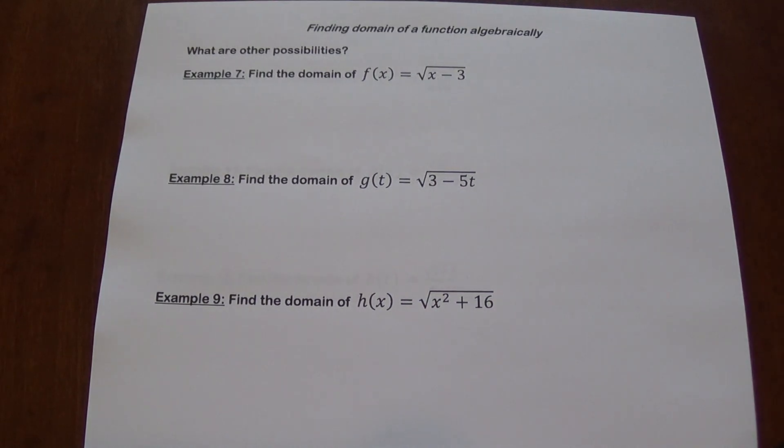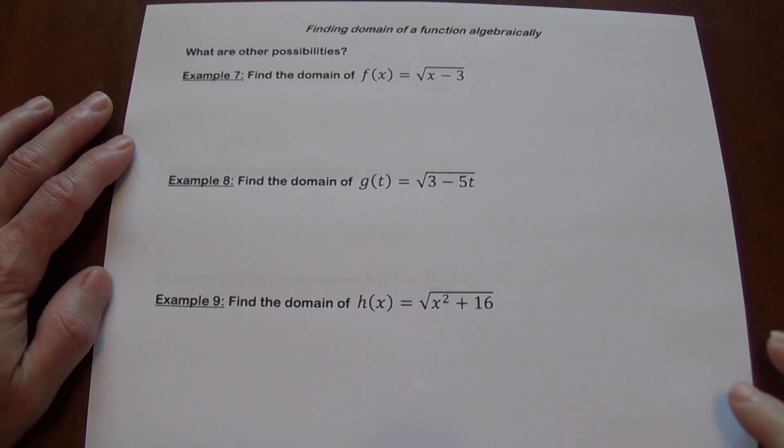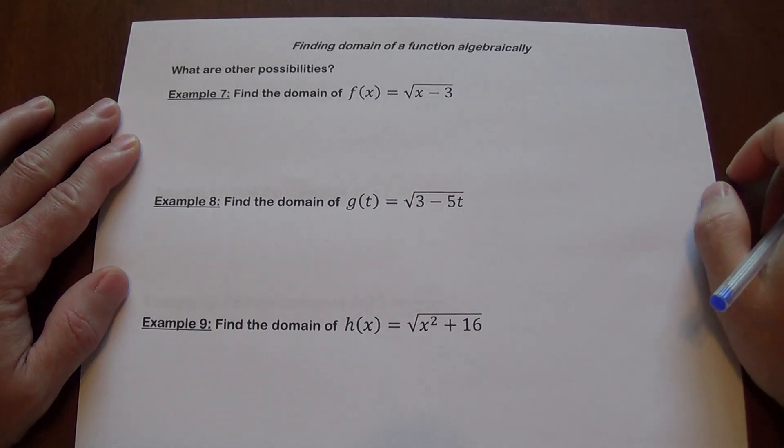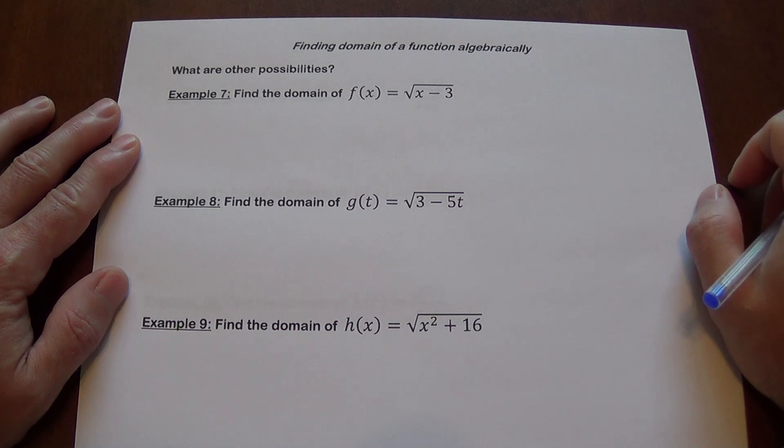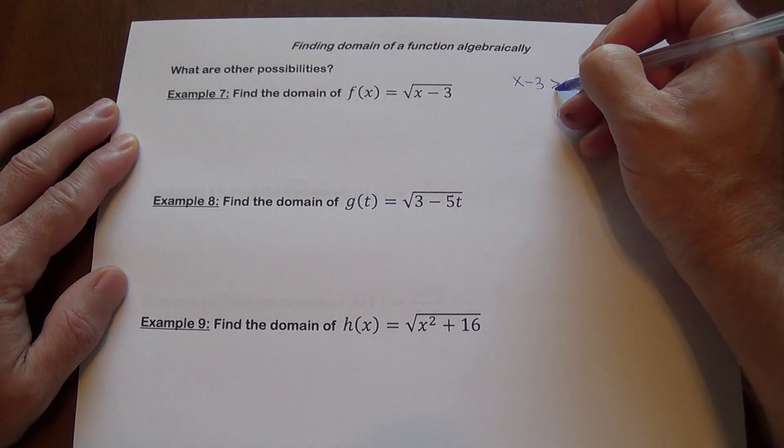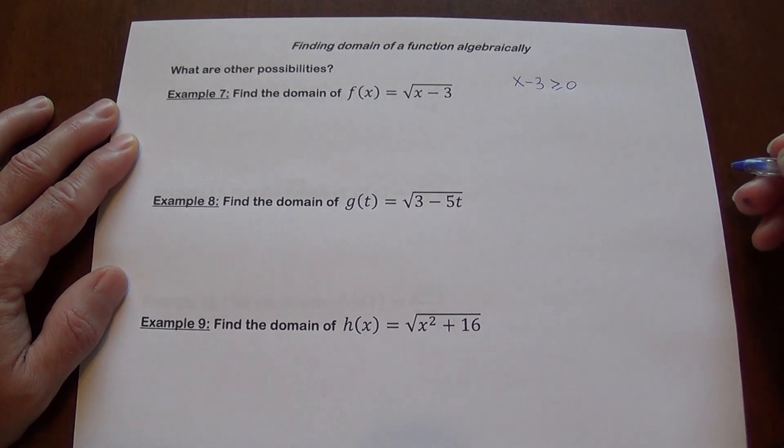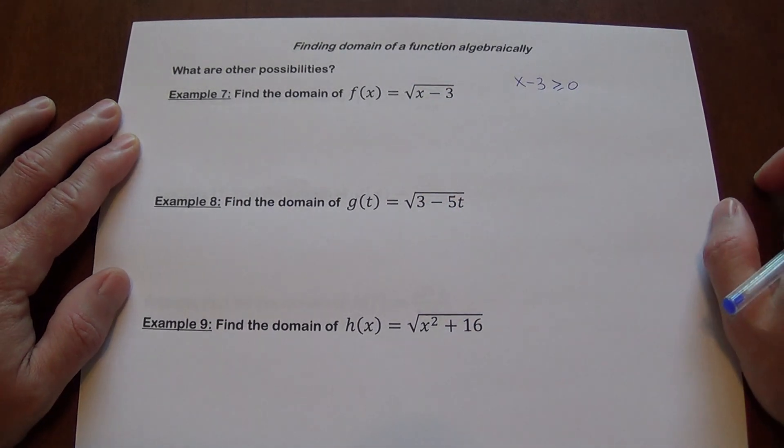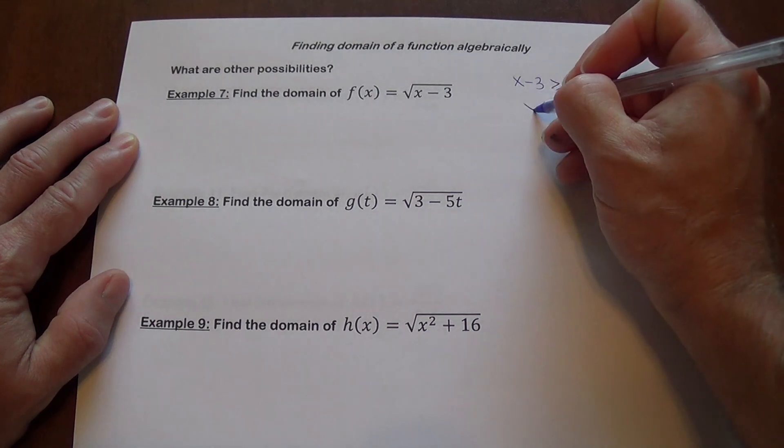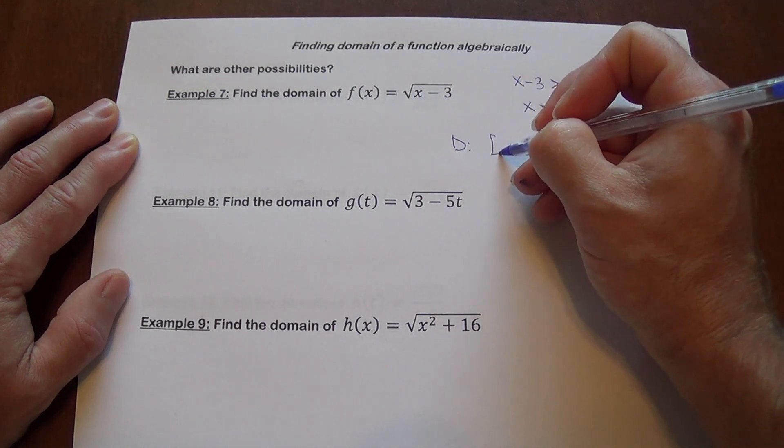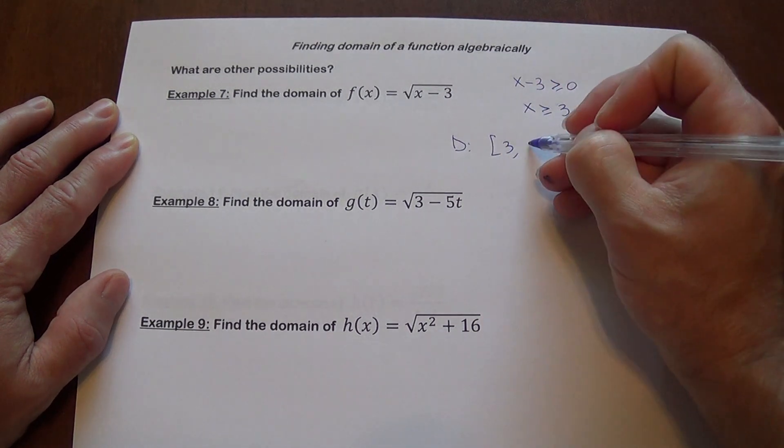What's another possibility? Is it always division? No. You also have square root. So with the square root, you want to remember that the expression under the square root, to make the whole thing real, we want it to be non-negative. So in this case, what we're going to do is say, okay, what I want is x minus 3 to be greater than or equal to zero. As long as the radicand is not negative here, we are not going to have any problems. So that means x is greater than or equal to 3. And the domain here is going to be 3 included to infinity.